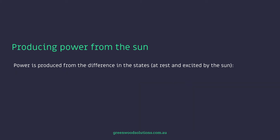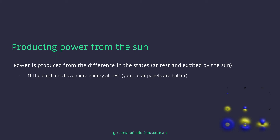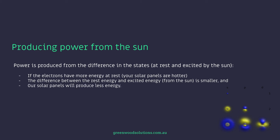Power is produced from the difference in the states at rest and excited by the sun. If the electrons have more energy at rest — meaning your solar panels are hotter — the difference between the rest energy and the excited energy from the sun is smaller, and our solar panels will produce less energy.